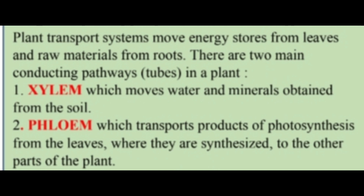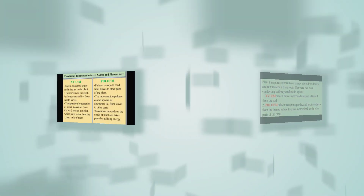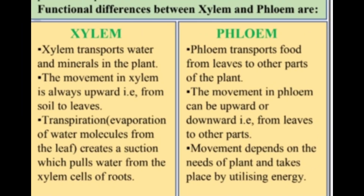Xylem moves water and minerals obtained from the soil, and phloem transports products of photosynthesis from the leaves where they are synthesized to other parts of the plants. Xylem transports water and minerals from soil through roots to different parts of the plant. Phloem transports food made in leaves to different parts of the plant.